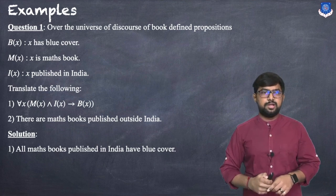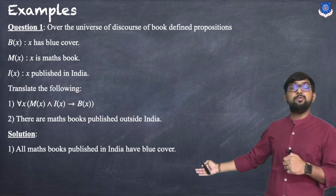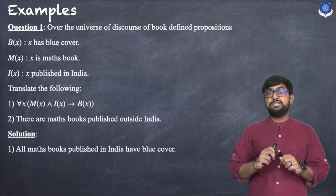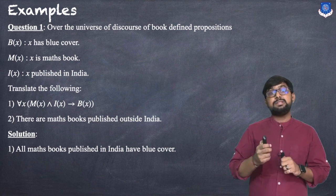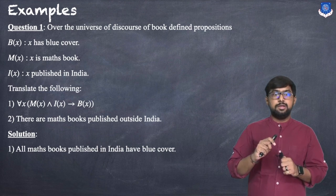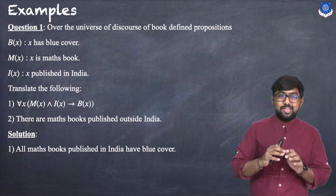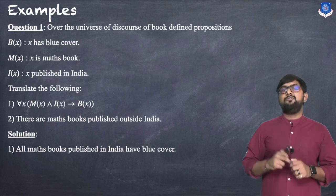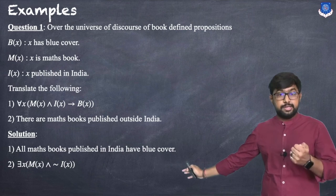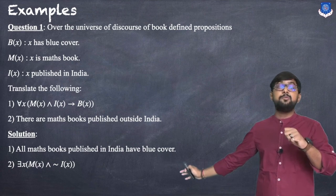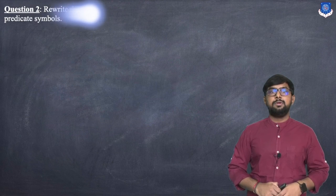For the second part, 'there are Matt's books published outside India', we convert to symbolic form. Since it says 'there are', we use the existential quantifier. Matt's books means M(x), and published outside India means ¬I(x). So the symbolic form is: ∃x, M(x) ∧ ¬I(x).